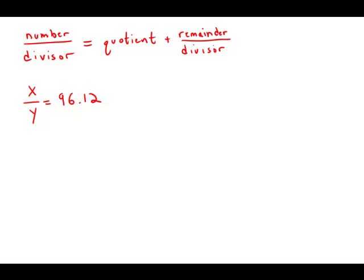The first thing we need to keep in mind is the general formula for how division works. A number divided by a divisor equals a quotient plus a remainder over a divisor.